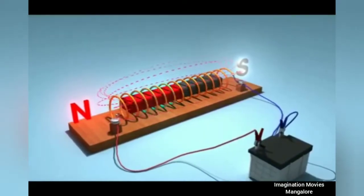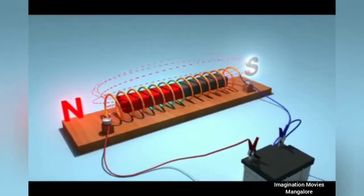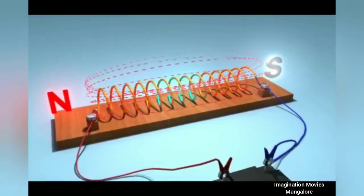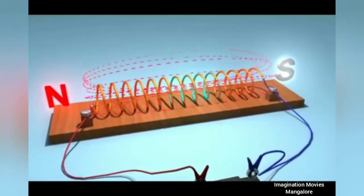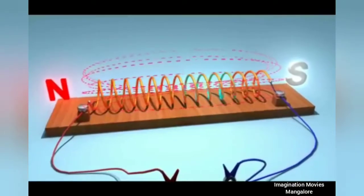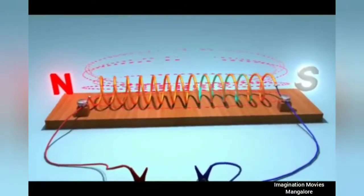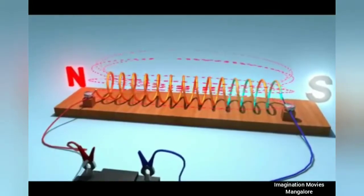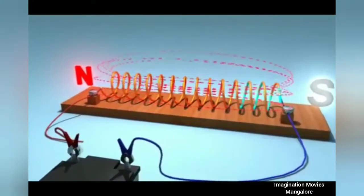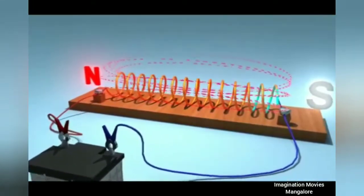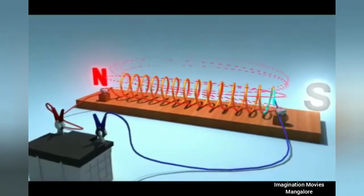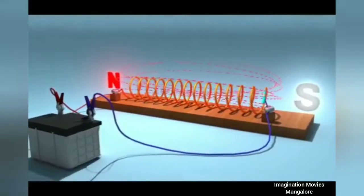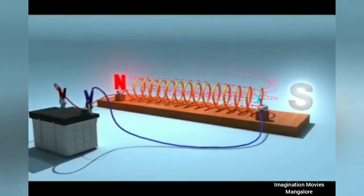The magnetic field lines in a solenoid are the same as in a bar magnet. They pass through the solenoid and return from the other end. The field lines inside the solenoid are parallel to each other, and parallel lines have the same magnitude of the magnetic field. That is why the solenoid has a uniform magnetic field.